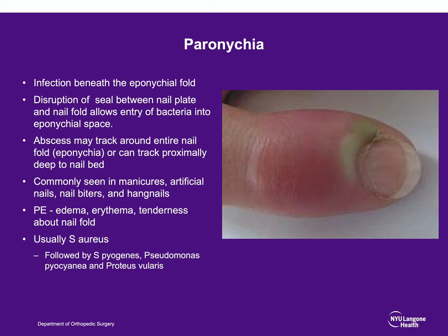Starting distally, a paronychia is an infection of the nail fold. As seen in the picture to the right, you can see visible purulence underneath the eponychial fold. Sometimes this can track all the way around the entire nail fold. Staph aureus is the most common, with other common organisms listed on the bottom left.